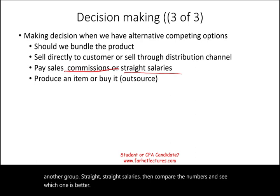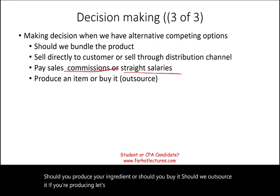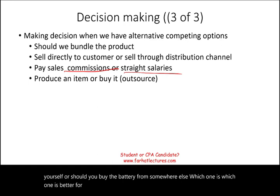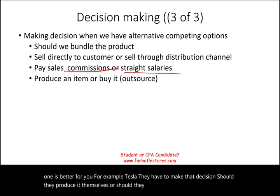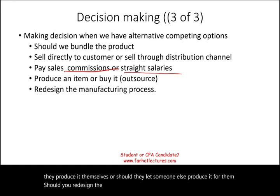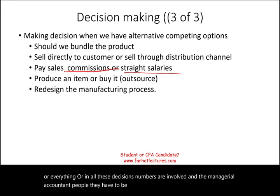Should you produce your ingredient or buy it — should you outsource it? For example, if you're producing vehicles, should you produce the battery yourself or buy it from somewhere else? Tesla has to make that decision: produce it themselves or let someone else produce it. Should you redesign the manufacturing process or keep it as is? All these decisions involve numbers, and managerial accountants have to be involved in those important decisions.